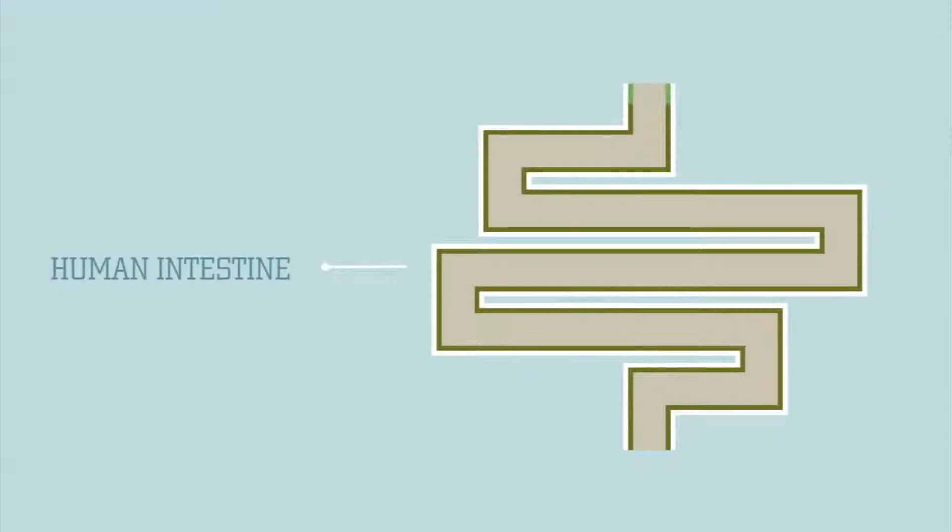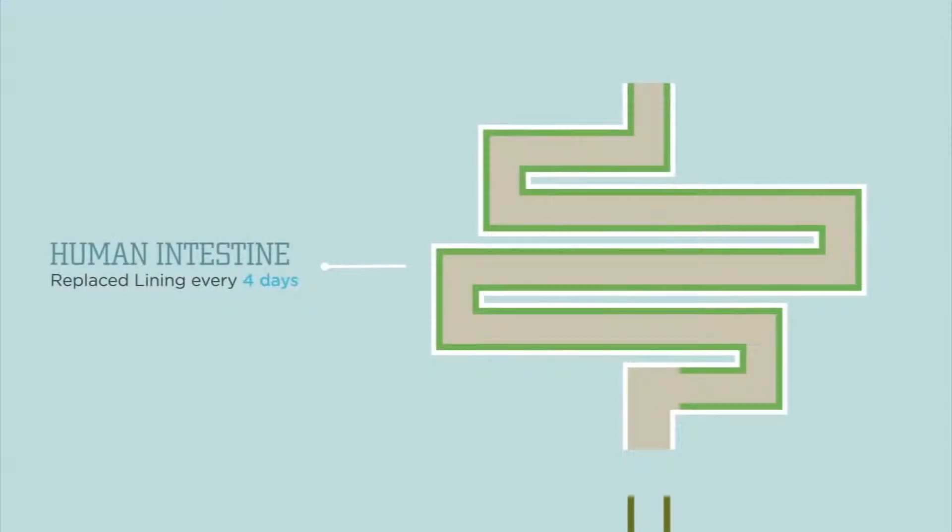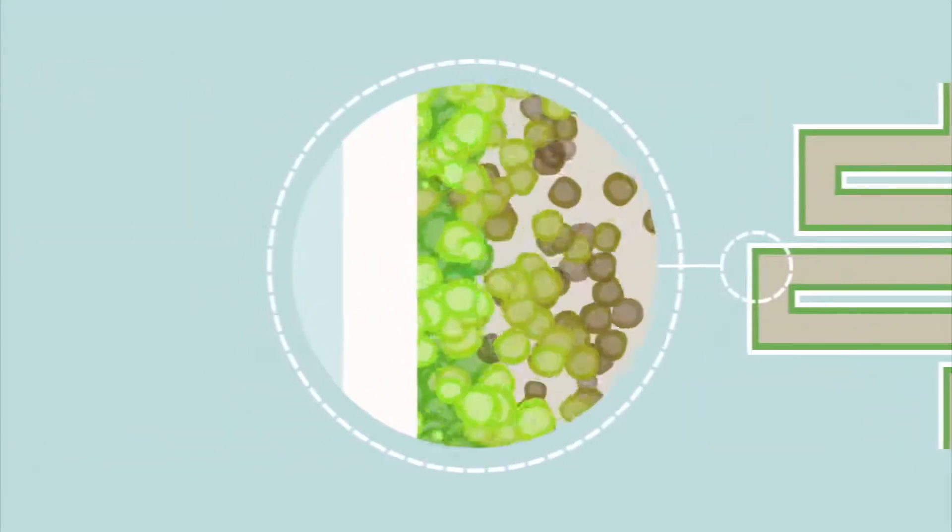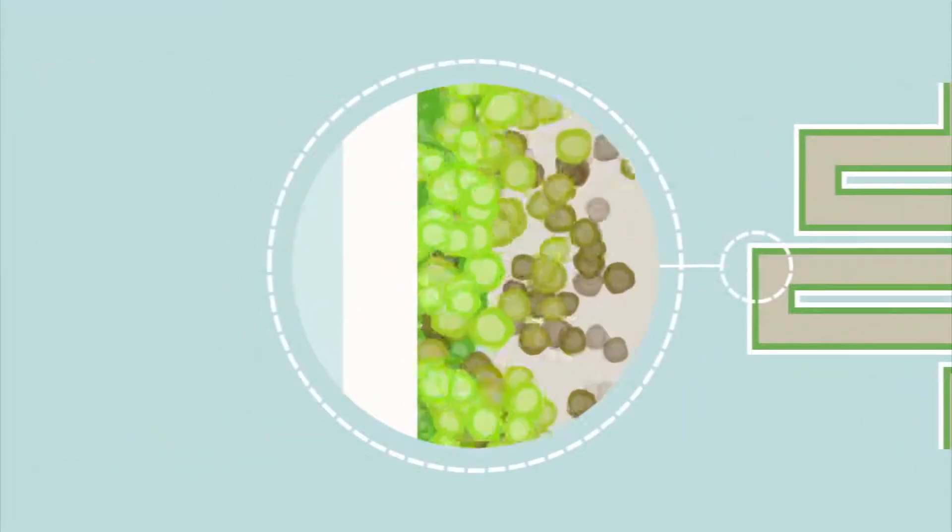For example, you completely replace the lining of your intestines every four days. Stem cells beneath the lining of your intestines replace these cells as they wear out.